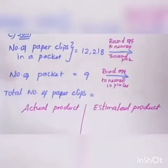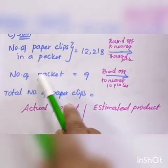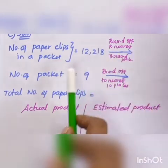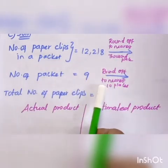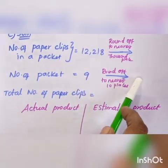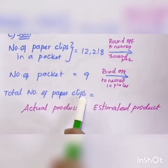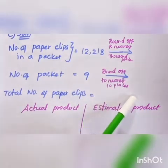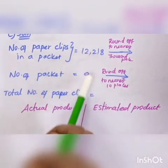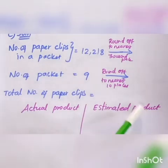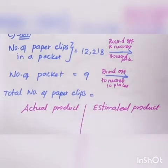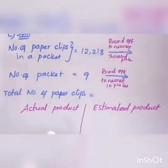Next, the third problem: the number of paperclips in a packet is 12,218, rounded to the nearest thousand place. The number of packets is 9, rounded off to the 10th place. So 9 rounds off to 10. The total number of paperclips is found by multiplication.